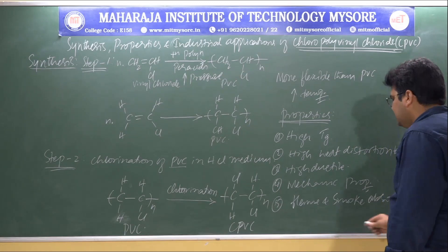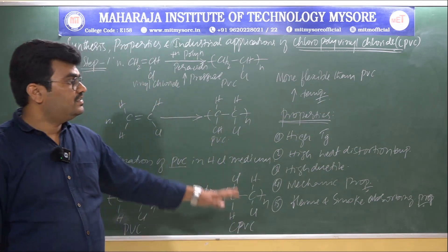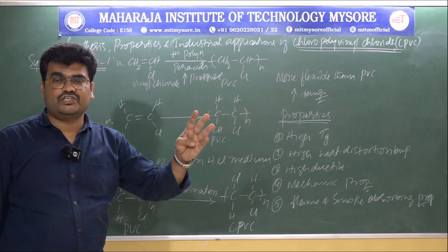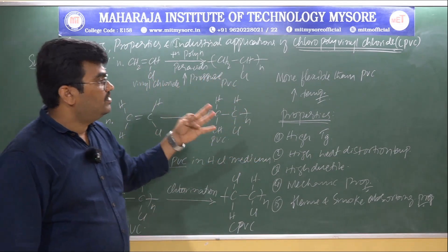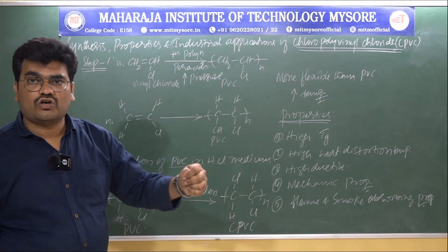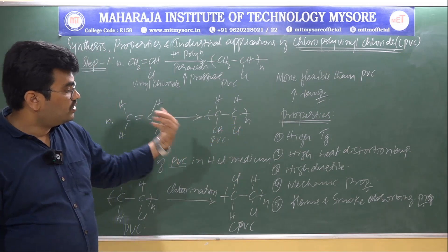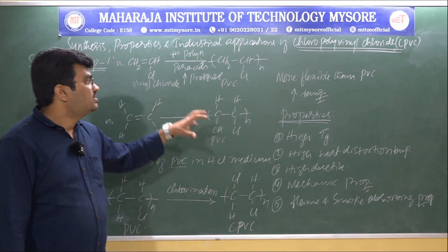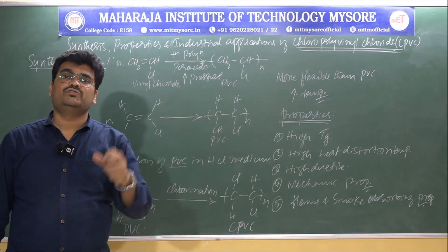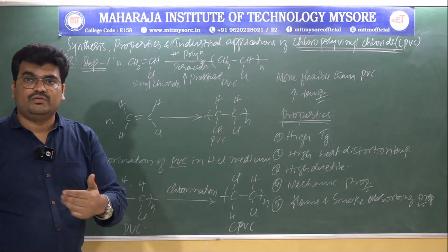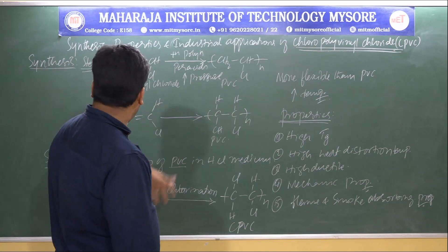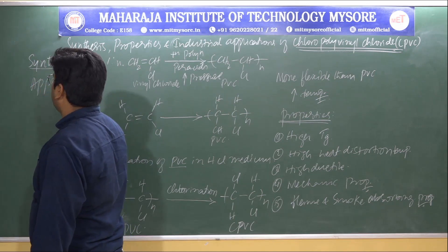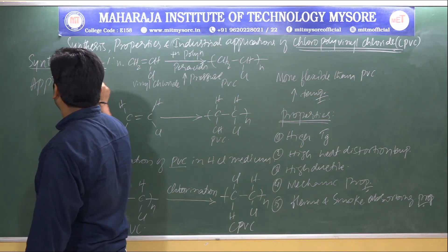CPVC is highly ductile. All these properties — high glass transition temperature, high heat distortion temperature, chemical resistance, flexibility, strength, resistance to corrosion, high ductility, outstanding mechanical properties, and flame and smoke absorbing properties — together make CPVC the third most widely used thermoplastic polymer in the polymer industry. CPVC has been used as an application material since the 1950s.